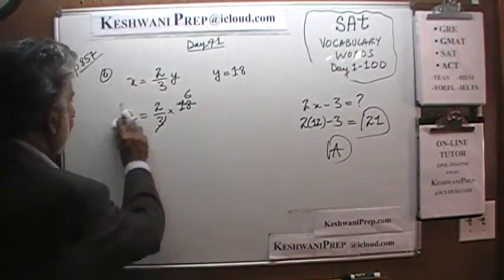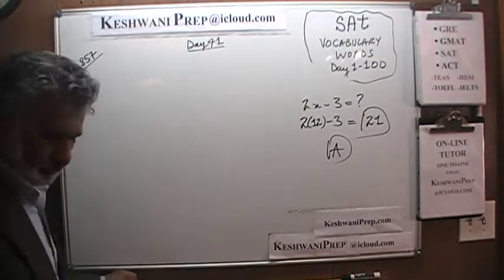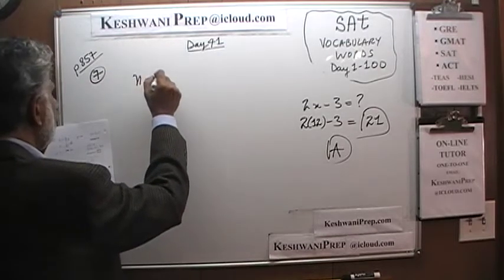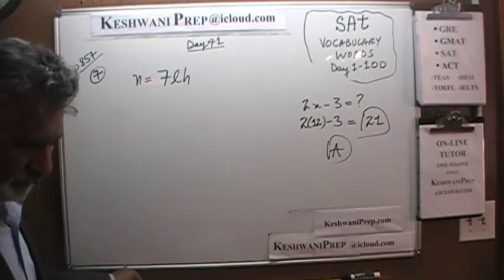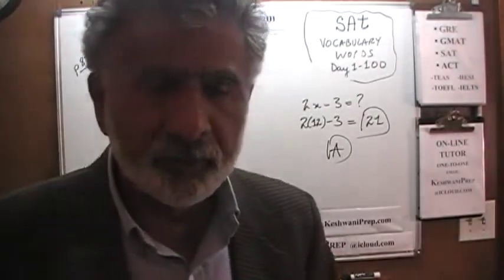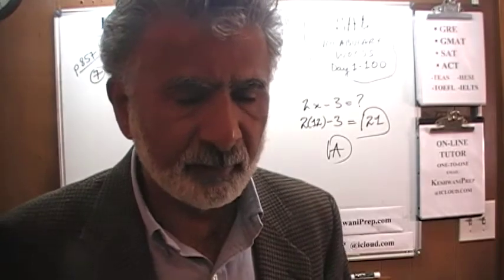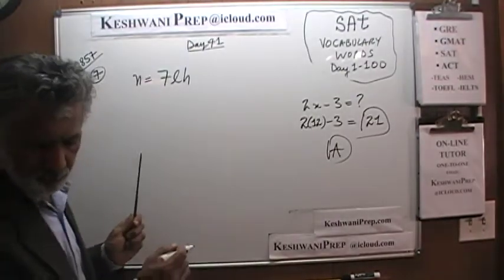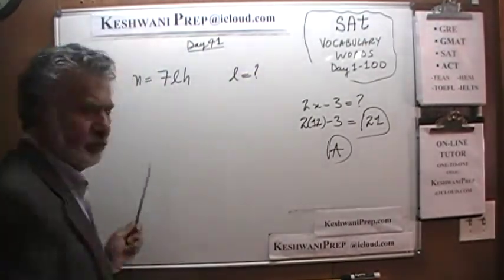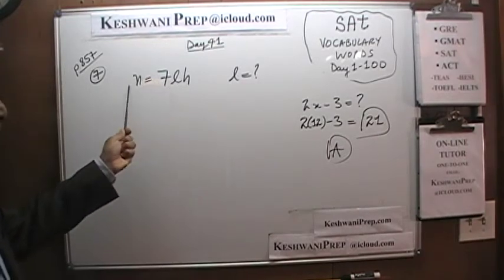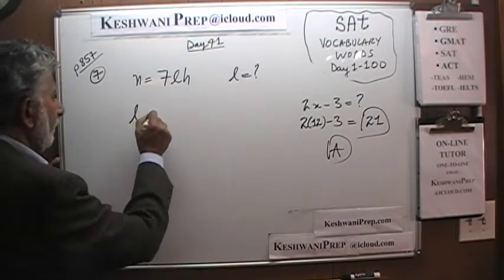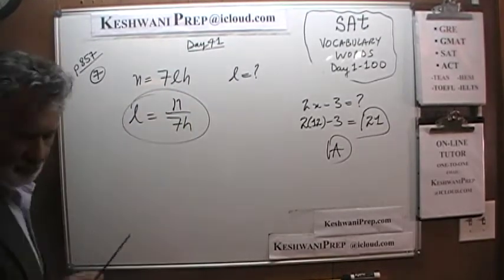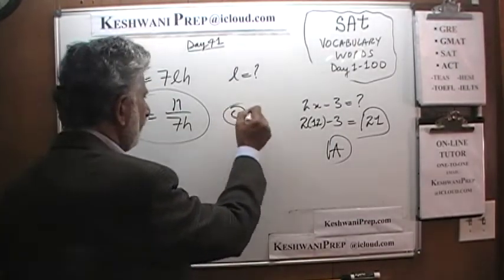Number 7. We are told that n equals 7LH. We want to solve for L. Divide both sides by 7 times H, and L equals n over 7H. That's how simple and straightforward it is. The answer is C.